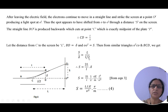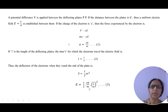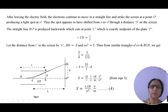Therefore S = 2·capital L·delta / small l. Substituting the value of delta from equation 3, we get: S = (eE/m) · (capital L · small l) / v². After cancellation, this gives S = (capital L · small l · E) / (v² ) · (e/m). Retaining e/m, we get equation number 4: e/m = S·v² / (capital L · small l · E).